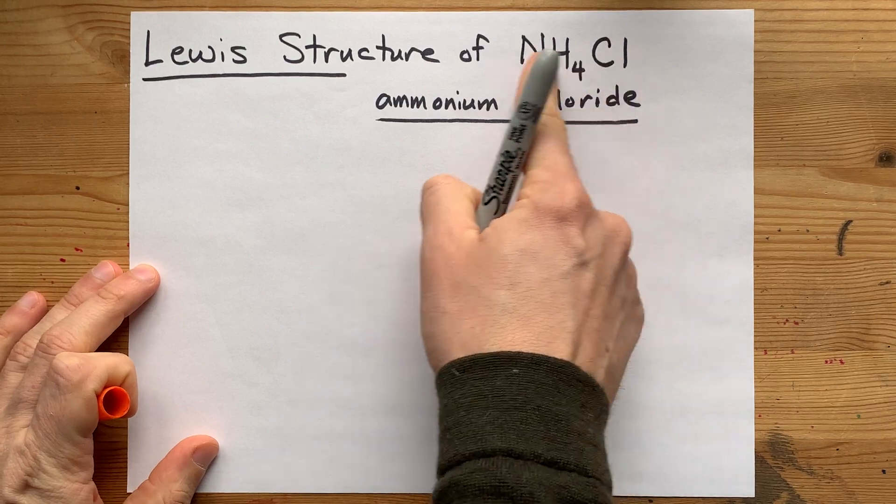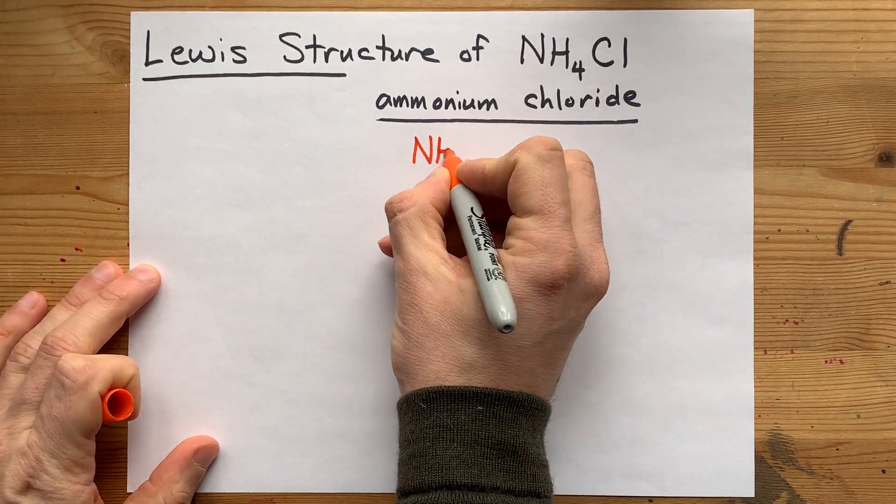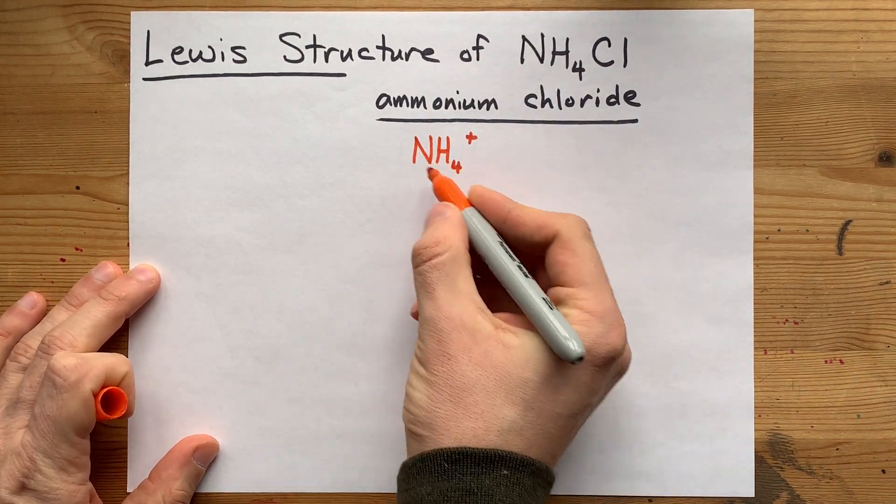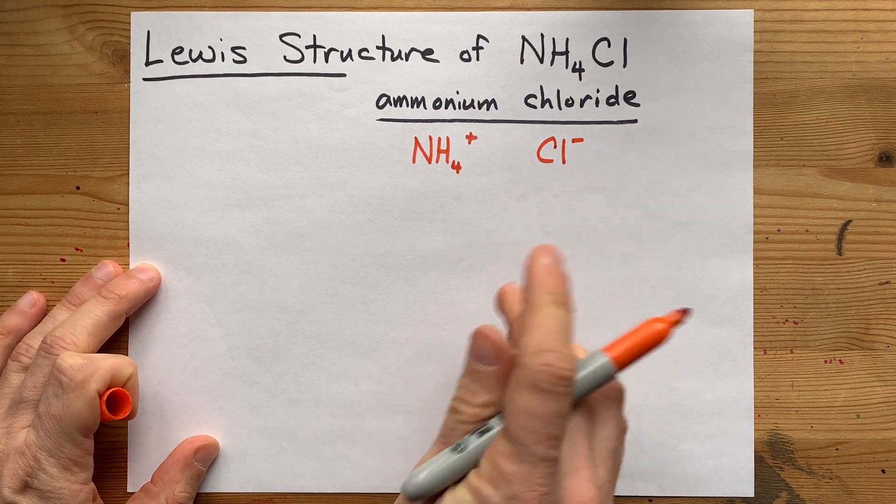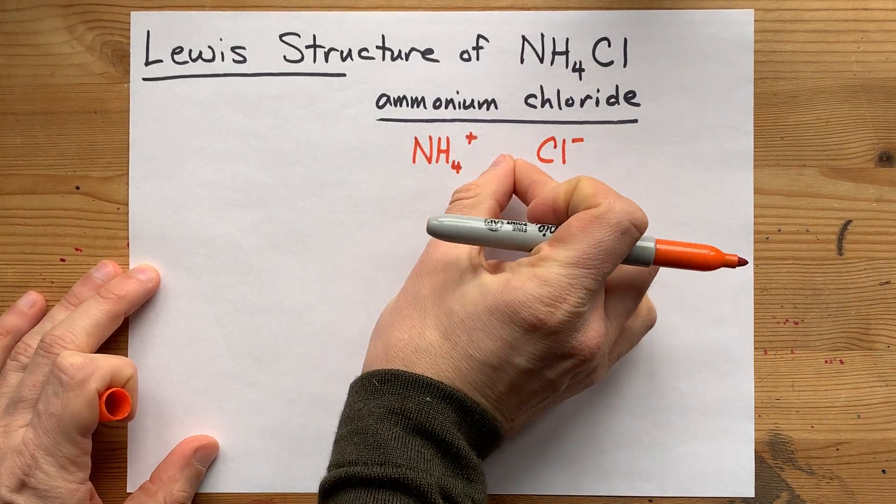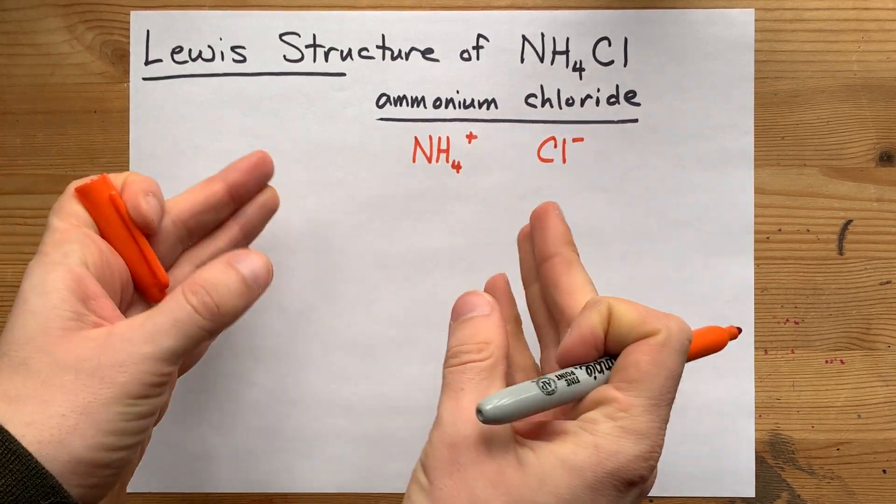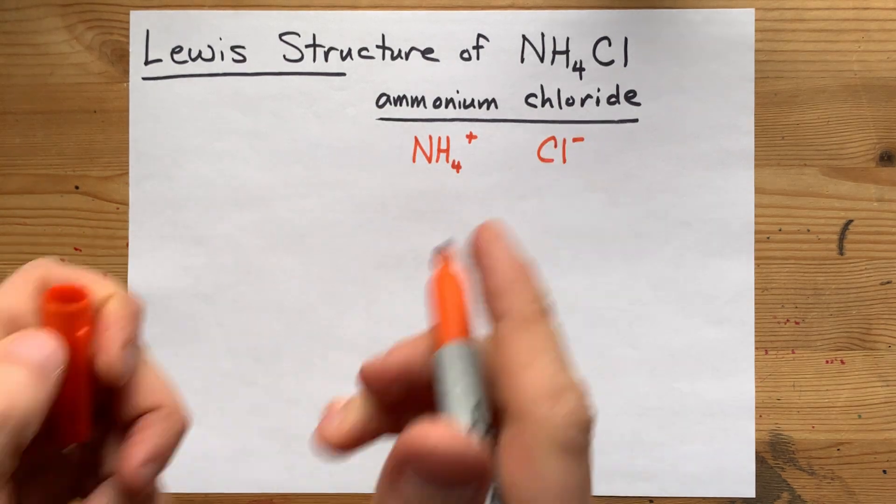This is an ionic compound which comes from an ammonium ion, which is NH4+, and a chloride ion, Cl-. That means there's an ionic bond between the two, and each of these is its own separate entity. They just happen to be attracted to each other because they have opposite charges.